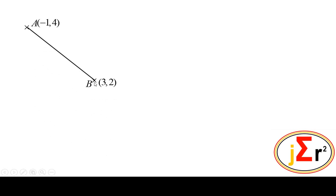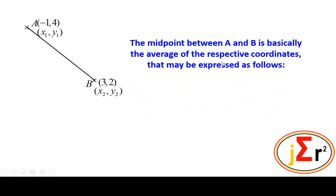We are required to find the midpoint of the segment joining the two points A and B. The midpoint between A and B is basically the average of the respective coordinates. That may be expressed as follows.